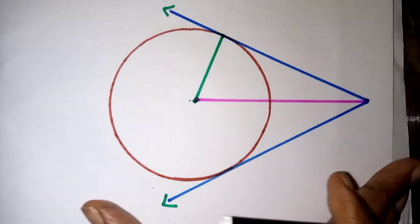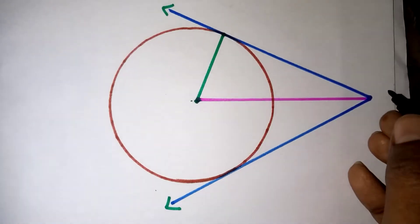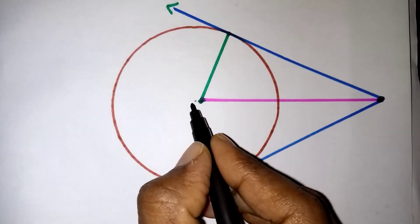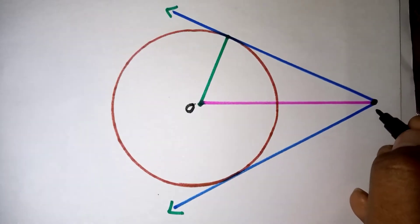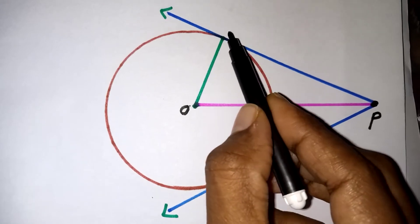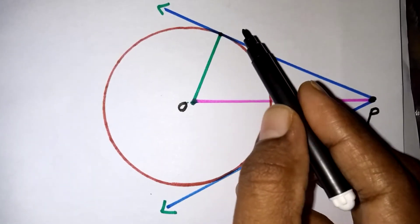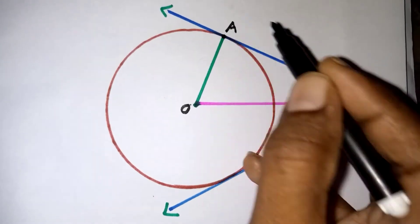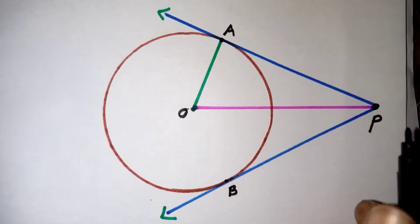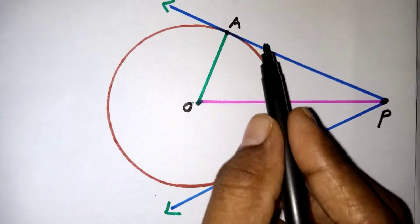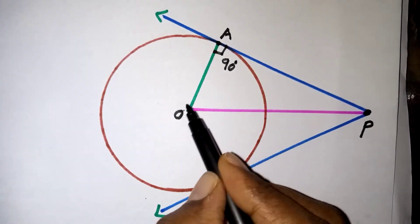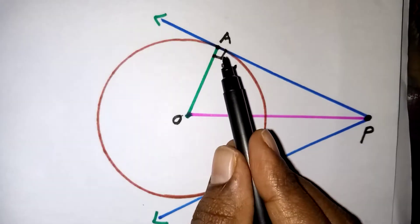Here is a diagram for a tangent drawn from an exterior point. This is the exterior point P and O is the center of the circle. From P we draw two tangents touching the circle at point A and point B respectively. Since the tangent and radius are always perpendicular, angle OAP is 90 degrees, making triangle OAP a right-angled triangle.